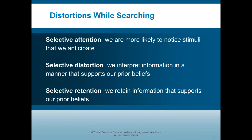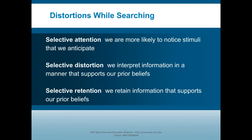Now I want to pivot away from search. I made three points about the cost and benefit of search, the role of prior expertise, and these distortions. Now I want to think about what customers do when they can't search or they don't have the expertise to do so — I want to talk about the inference process. Customers use information that they can see — observable cues — to infer the unobservable information, in this case unobservable product features.